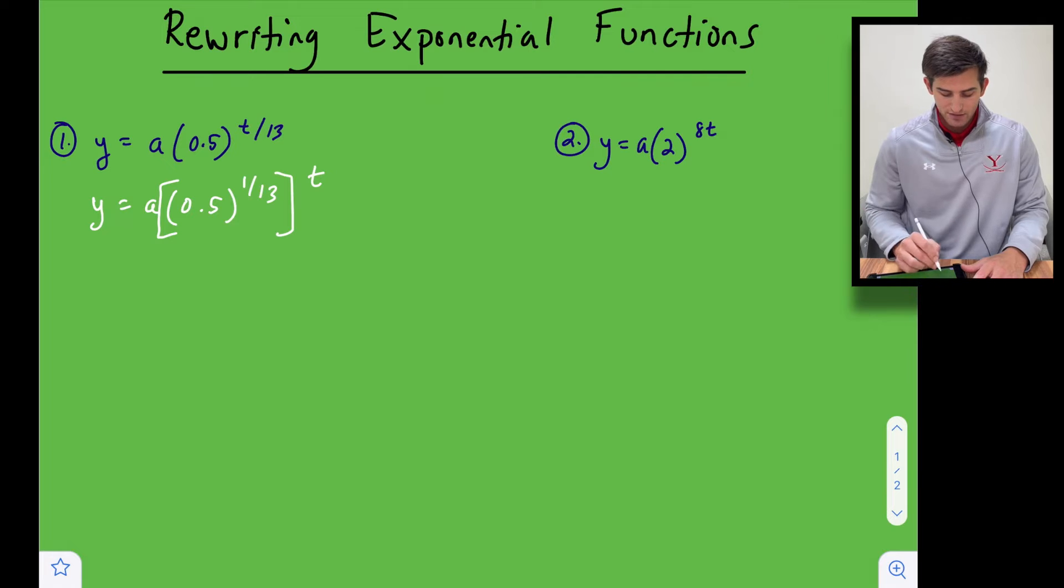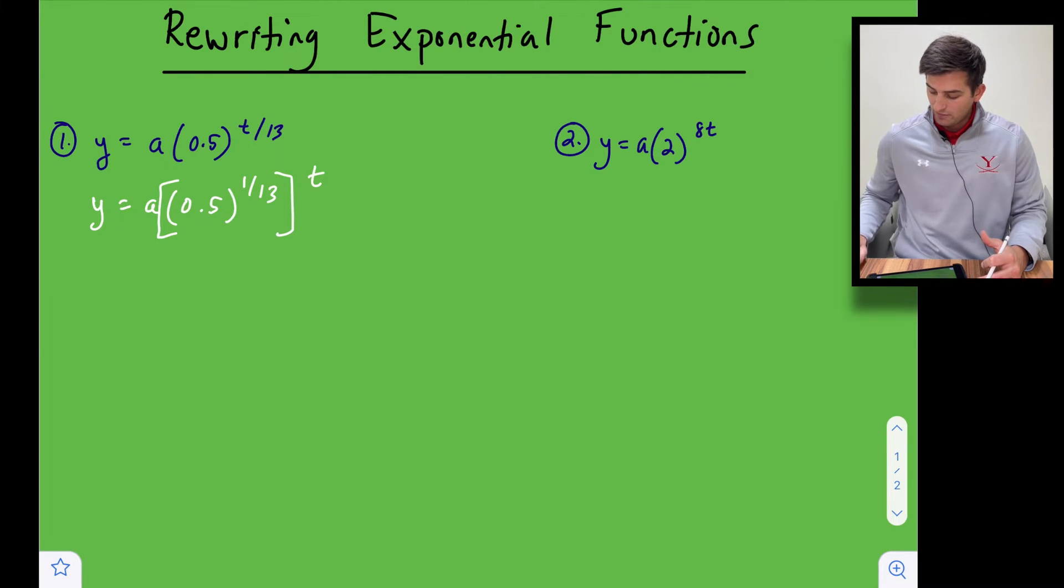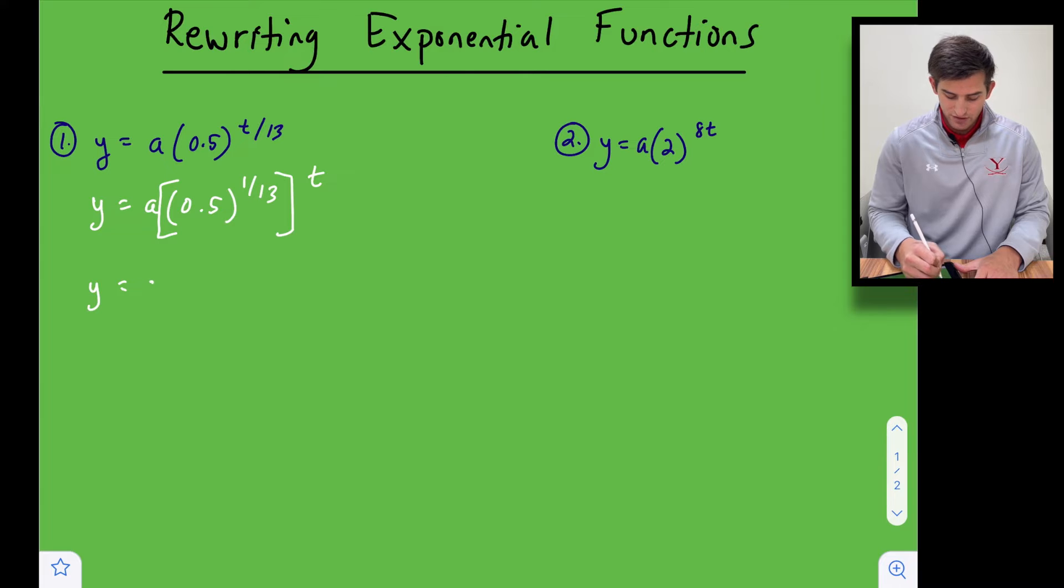Okay, so now what we can do is evaluate 0.5 to the 1/13th power in our calculator. So 0.5 to the 1/13th and that gives us a decimal and I'll write that on the screen just kind of rounding it. So that's going to be 0.9481 to the t.